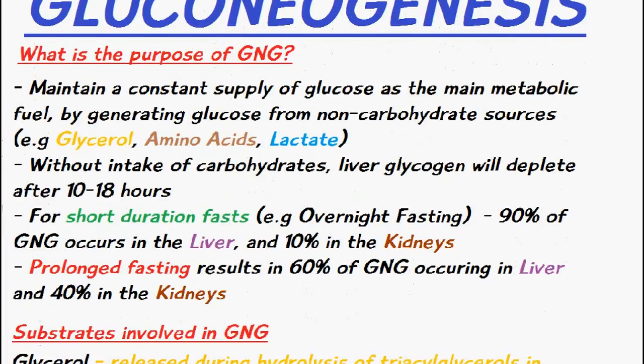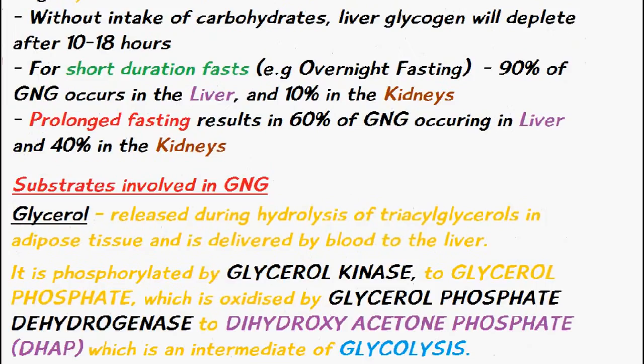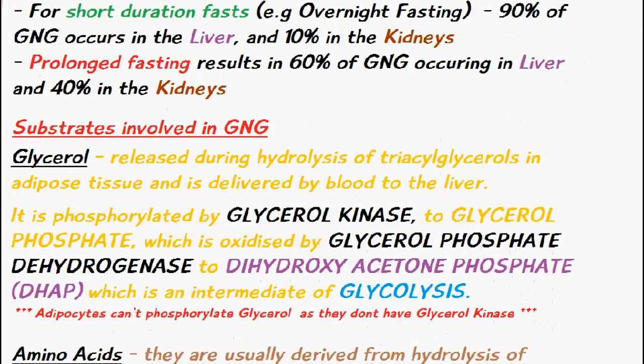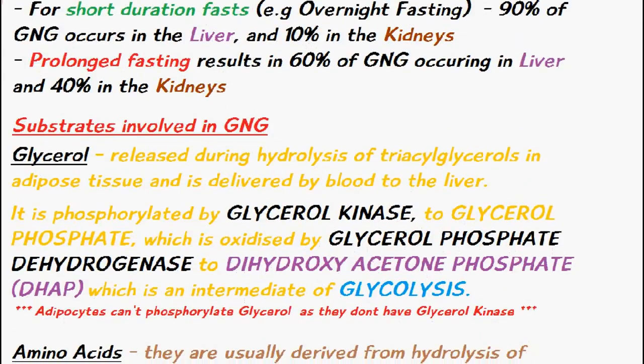So which substrates are involved in gluconeogenesis? Well, we mentioned glycerol. Glycerol is released during hydrolysis of triacylglycerols in adipose tissue and is delivered by the blood to the liver. It's phosphorylated by glycerol kinase to glycerol phosphate, which is then oxidized by glycerol phosphate dehydrogenase to dihydroxyacetone phosphate — an intermediate molecule used in glycolysis. Adipocytes can't phosphorylate glycerol as they don't have glycerol kinase, which is why it must be transported to the liver first.